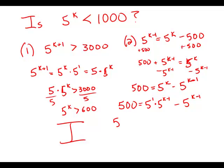And so now what I have is 5 times 5 to the k minus 1 minus 1 times 5 to the k minus 1. So that's 5 minus 1 times 5 to the k minus 1, which is 4 times 5 to the k minus 1. So 500 equals 4 times 5 to the k minus 1.